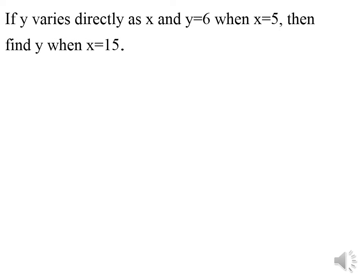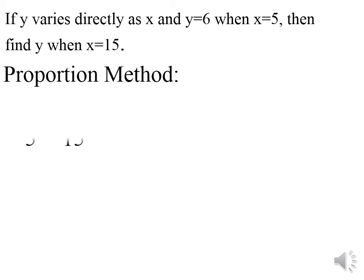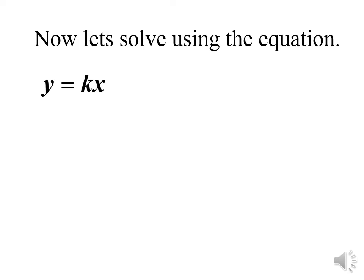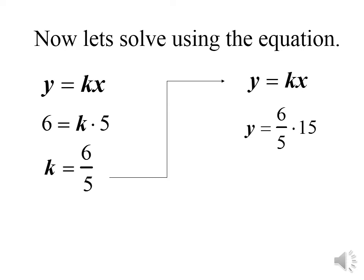If y varies directly as x and y equals 6 when x equals 5, find y when x equals 15. Using the proportion method: y1 over x1 equals y2 over x2, so 6 over 5 equals y over 15. Therefore y equals 6 times 15 divided by 5, which gives y equals 18. Alternatively, using the relation method: y equals k times x; with x equals 5 and y equals 6, k equals 6 over 5. The relation is y equals 6 over 5 times x. Replacing x with 15 gives y equals 6 over 5 times 15, so y equals 18.